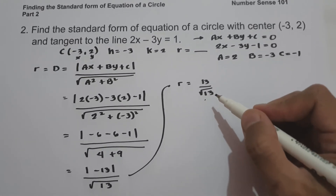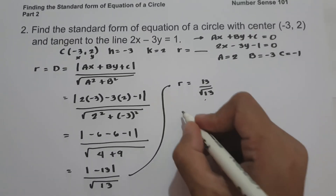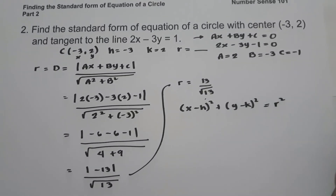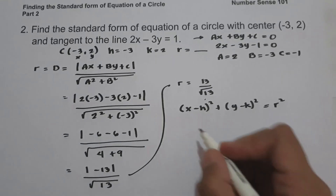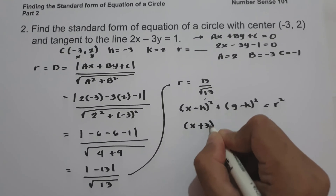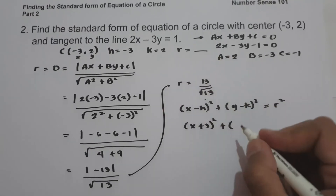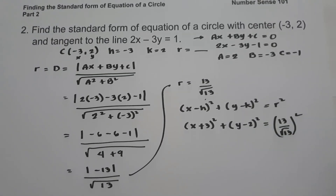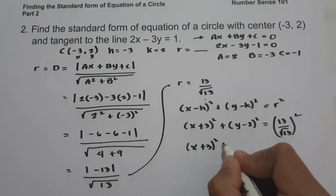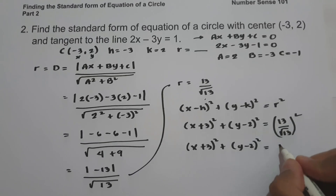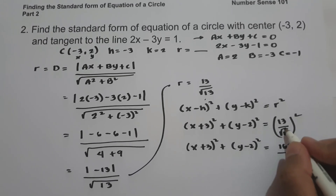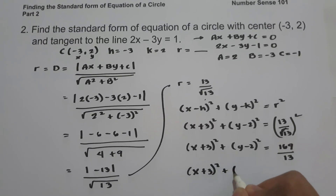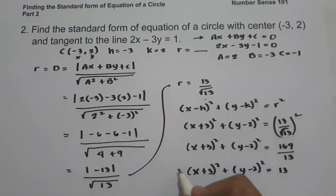We can rationalize this, writing the radius as 13 over square root of 13. For the standard form (x minus h)² plus (y minus k)² equals r², with h equals negative 3 and k equals 2, we get: quantity x plus 3 squared plus quantity y minus 2 squared equals the quantity 13 over square root of 13, squared. That gives us 13 squared which is 169, over square root of 13 raised to the 2nd power which equals 13. Therefore, the standard form is: quantity x plus 3 squared plus quantity y minus 2 squared equals 13. And this is our answer.